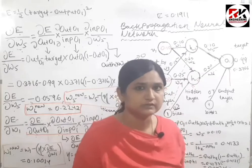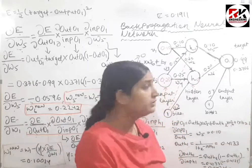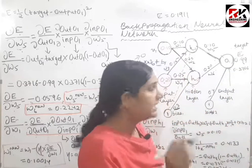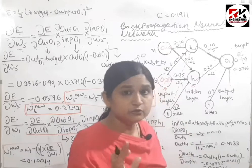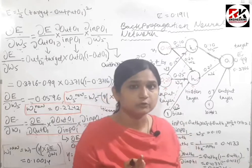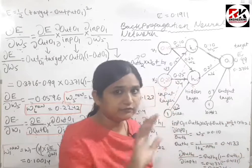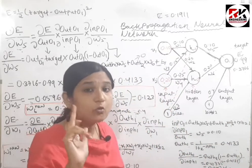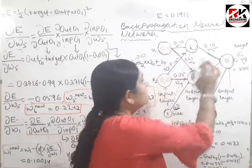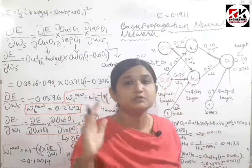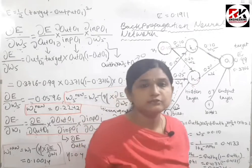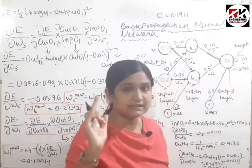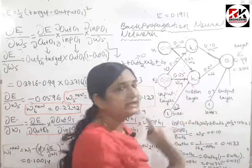So how can we do this? We have generated an error. What can we change? The actual output and the target we cannot change, and the inputs we also cannot change. The only thing we can change is the weight values w1, w2 up to w6. By changing these weight values we can make the actual output equal to our target output, making the error value 0.